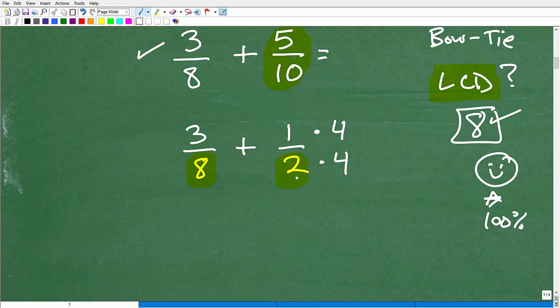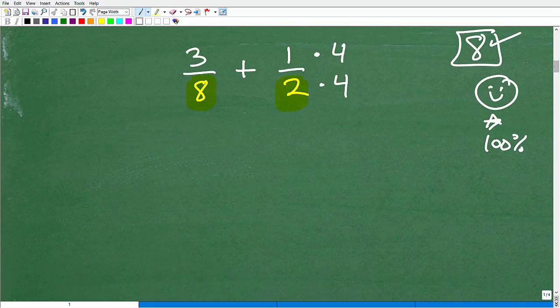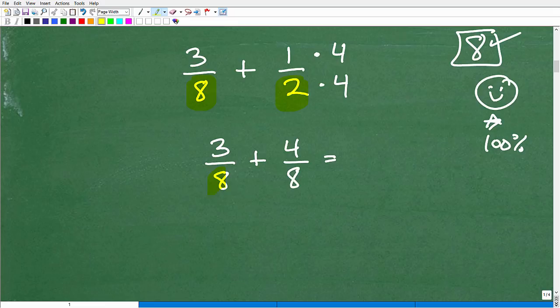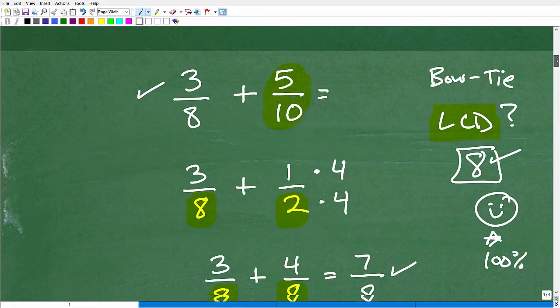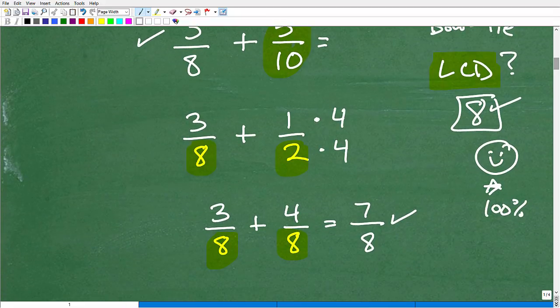So let's go ahead and, whoops, go ahead and rewrite this. So this is going to be 3 eighths plus 4 over 8. And now we have the same denominators. Now we're ready to go ahead and add this. So we keep the same denominator, 8, and 3 plus 4 is 7, 7 eighths, okay? So a lot of you out there are like, well, this is easy, too. I could just go this route. Yes, you could.